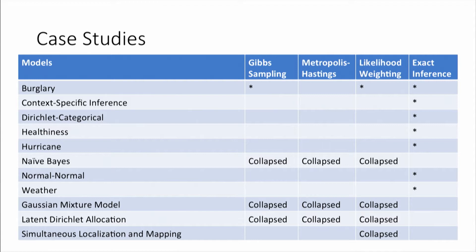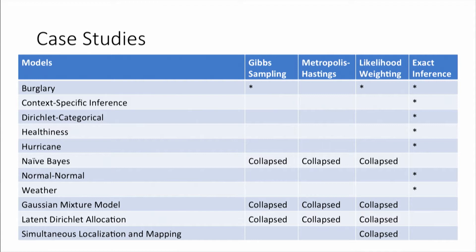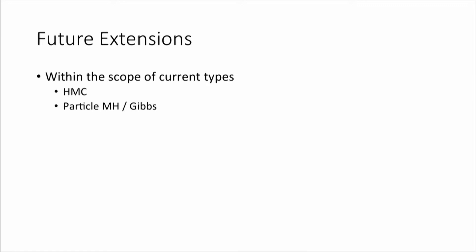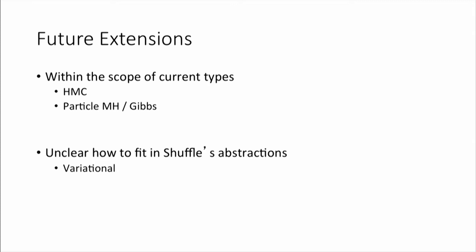Using these four distribution types, we've built a number of case studies. Shuffle can do Gibbs sampling, Metropolis-Hastings, likelihood weighting, and exact inference — as well as variations like collapsed samplers that combine sampling and exact inference. As for limitations: many sampling-based algorithms fit into our distribution abstractions, but we don't have language constructs for all of them — for example, Hamiltonian Monte Carlo gives a different type of kernel that we haven't implemented yet. We're also unsure how variational inference fits in, as we're not sure what it means to verify a variational inference algorithm is correct.